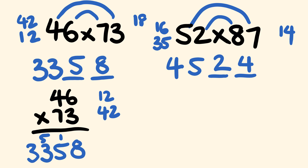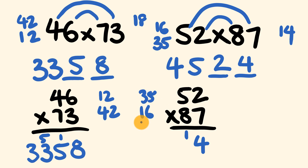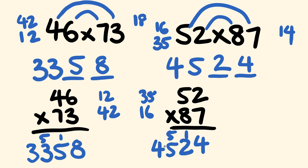Let's check with cross multiplication on 52 multiplied by 87. Units: 2 times 7 is 14 — 4 down, carry 1. Tens cross: 5 times 7 is 35 and 2 times 8 is 16 — adds to 51, plus the carried 1 is 52, so 2 down and carry 5. Hundreds: 5 times 8 is 40 plus 5 equals 45. Answer: 4524 — looking good.